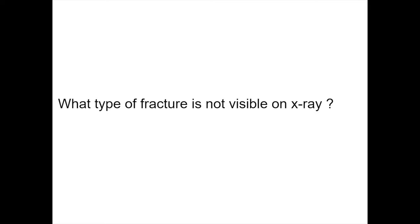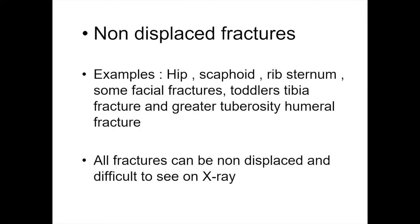They're non-displaced fractures. Displaced fractures can be seen by anybody — it's where they're mal-aligned. But non-displaced fractures are not visible. Examples include the hip, scaphoid, ribs, sternum, some facial fractures, the toddler's tibia fracture, and the greater tuberosity of the humerus fracture. All of these cannot be seen on x-ray and for the inexperienced doctor they can provide great difficulty in diagnosis.